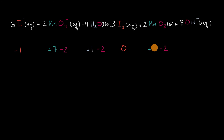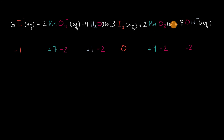Last but not least, if we look at these hydroxide anions, each oxygen is going to have a negative two oxidation number, and then the hydrogen is going to have a plus one. We can confirm that makes sense: negative two plus one is going to be negative one for each of these ions.